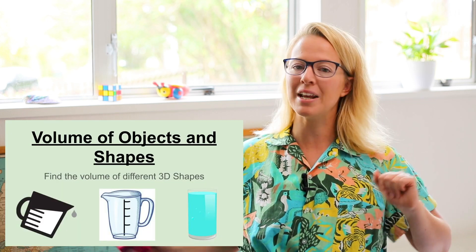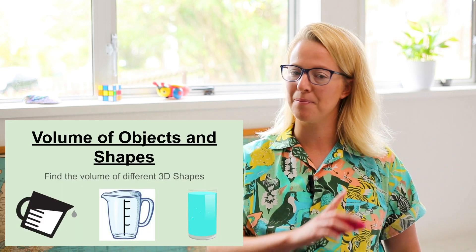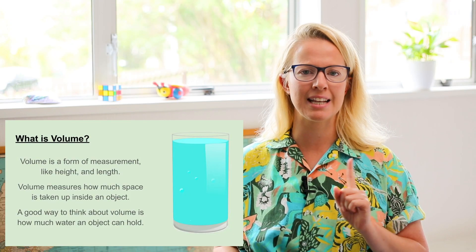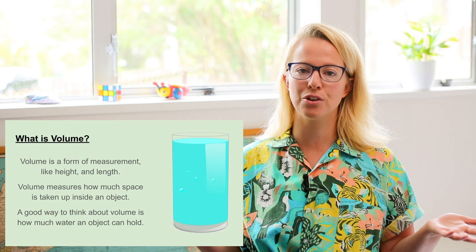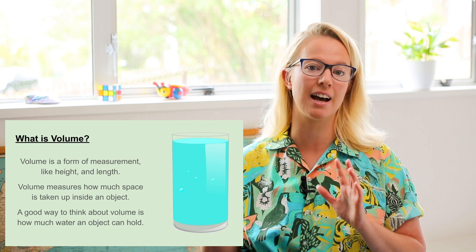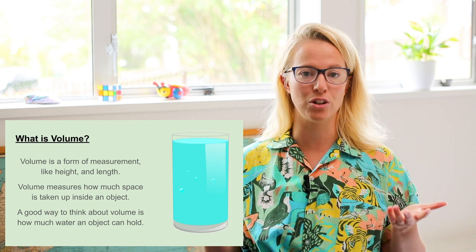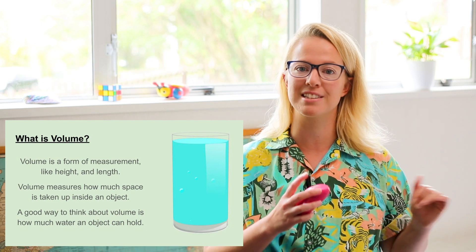First of all, we need to know what is volume. Volume is a form of measurement, just like height and length. Volume measures how much space is taken up inside an object. A good way to think about volume is how much water can an object hold — that's a really easy way to help us understand volume inside objects and shapes.